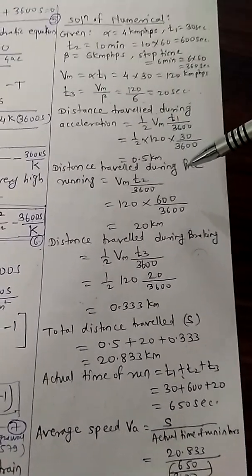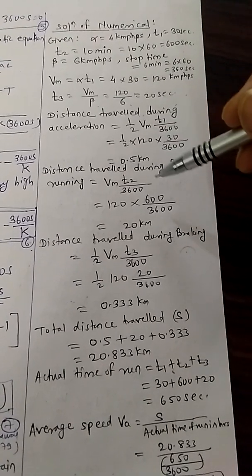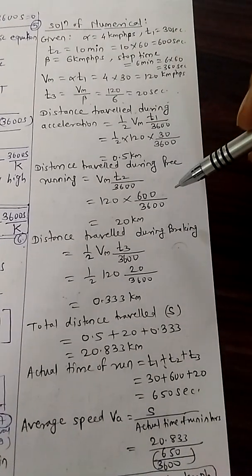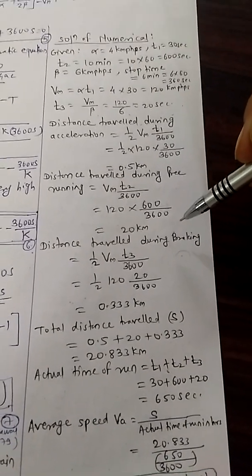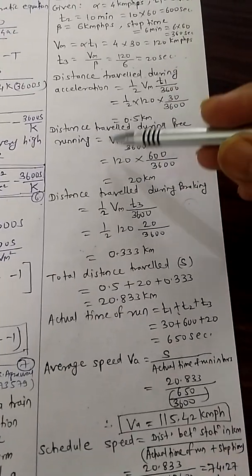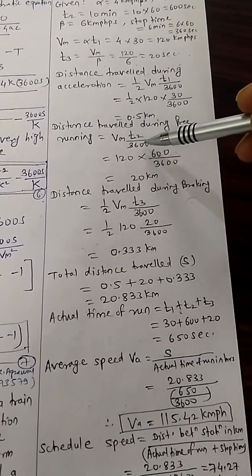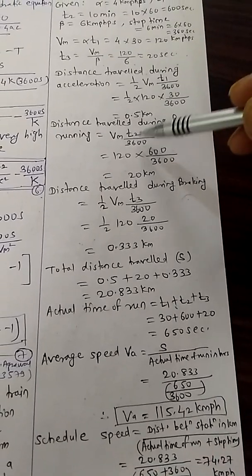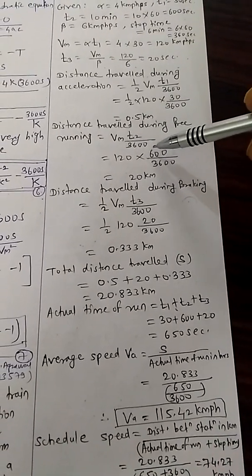Distance travelled during free running, that is Vm T2 upon 3600. So 120 into 600 upon 3600, 20 km. That is here rectangle, so that's why Vm into T2. And T2 is here in hours, so that's why divided by 3600.